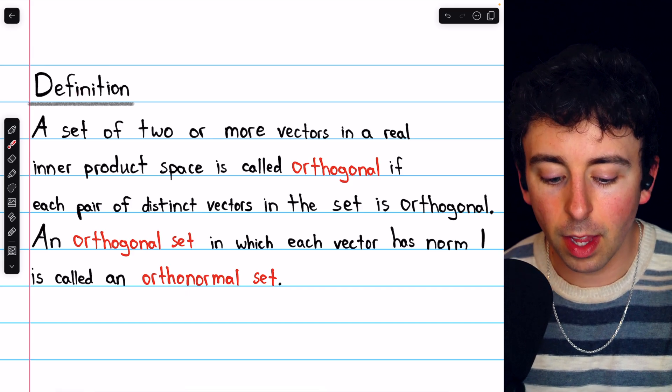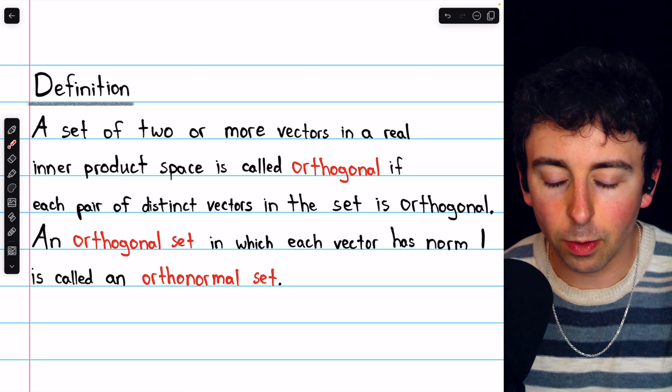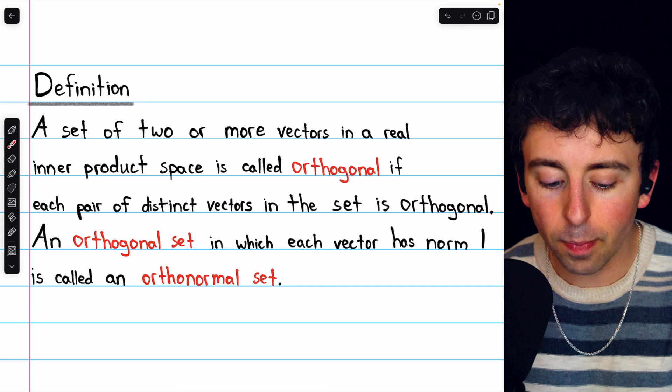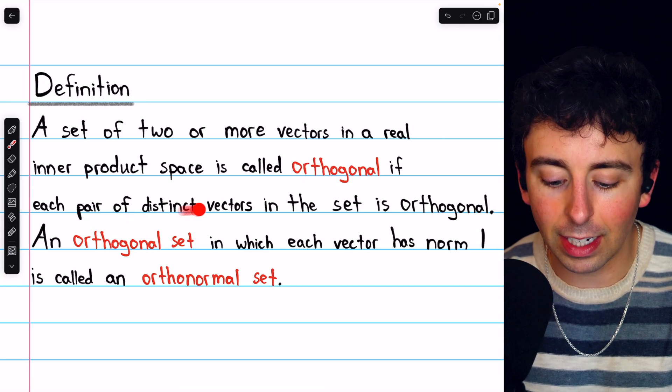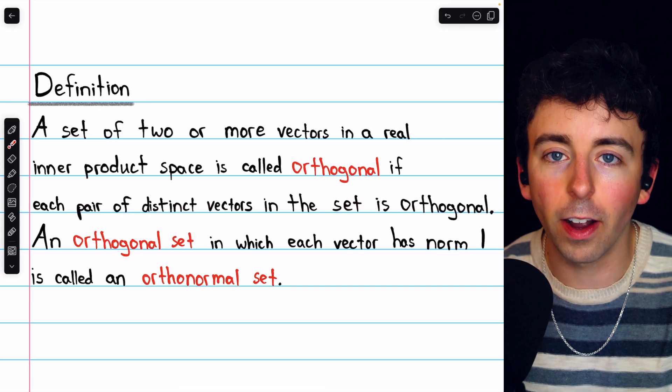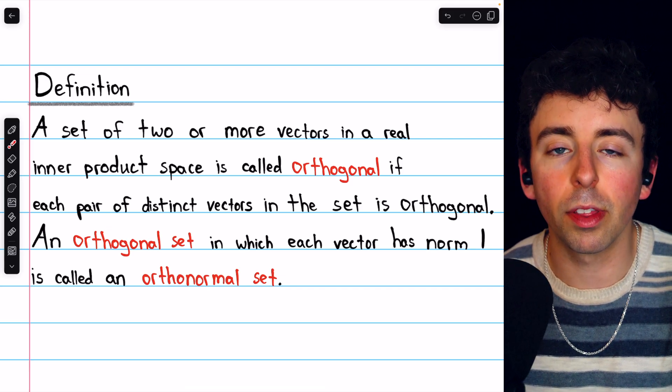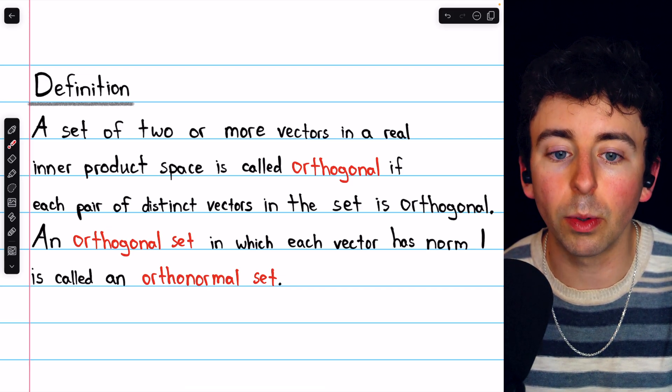Here is the definition. A set of two or more vectors in a real inner product space is called orthogonal if each pair of distinct vectors in the set is orthogonal. So you could pick any two distinct vectors from the set and they're going to be orthogonal. Their inner product will equal zero.